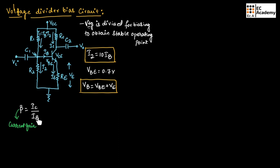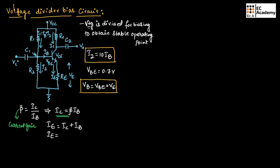So we can write beta equals Ic divided by Ib. From this, Ic is equal to beta times Ib. We know that Ie is equal to Ic plus Ib. Since Ic equals beta times Ib, we can write Ie equals beta·Ib plus Ib, therefore Ie equals Ib times (beta + 1).